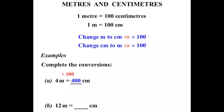Our next one: 12 metres equals how many centimetres? Well again we are starting with metres and changing it to centimetres. So we times by 100. 12 times 100 equals 1200. So 12 metres equals 1200 centimetres.